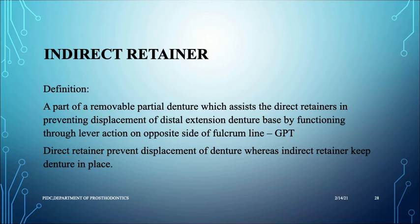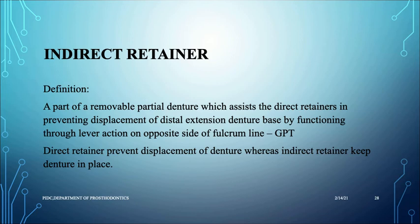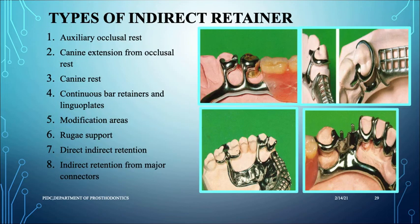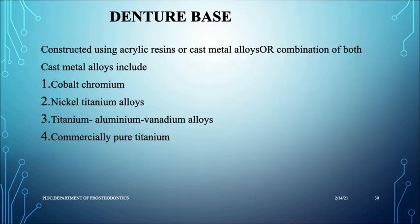Indirect retention is retention provided in an indirect way, supporting the direct retainers. It is the part of a removable partial denture that assists direct retainers in preventing displacement of a distal extension denture base by functioning through lever action on the opposite side of the fulcrum. Types of indirect retainers include auxiliary occlusal rests, canine extension from occlusal rest, canine rests, continuous bar retainers, linguo-plates, modification areas, rugae support, and indirect retention from major connectors.